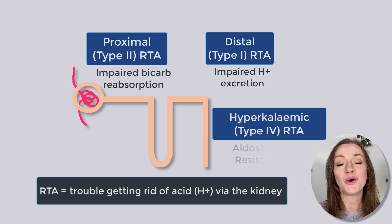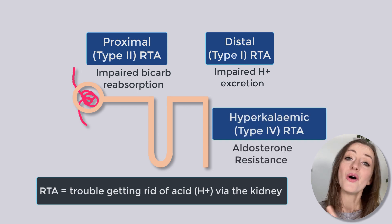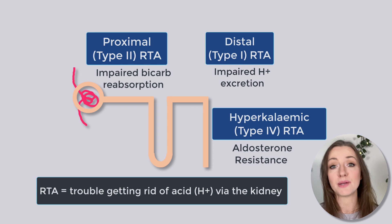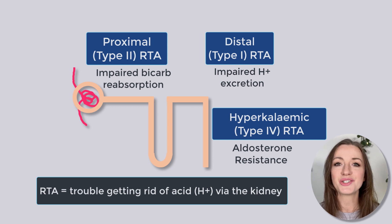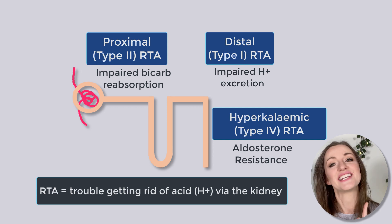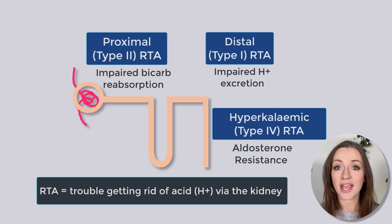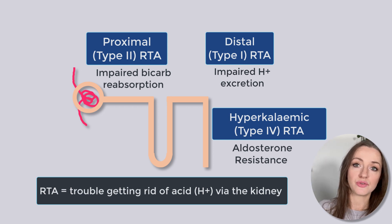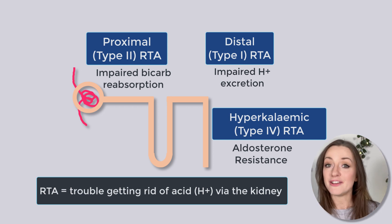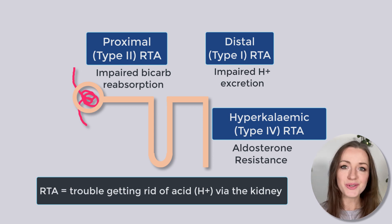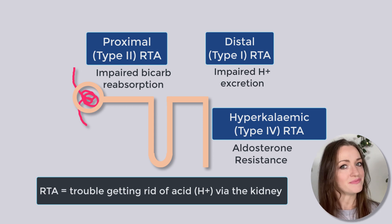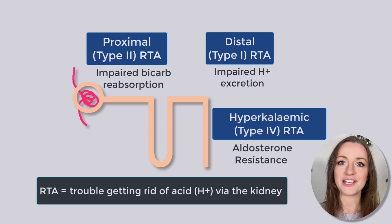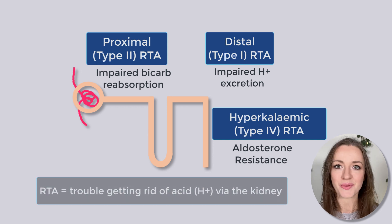In the collecting duct, we also have aldosterone — a hormone we normally associate with reabsorbing salt and water. But the truth is that aldosterone also has a side hustle: helping us to get rid of hydrogen ions when you're acidotic. So if you're acidic, your aldosterone is going to go up and it will come to the kidney and help you get rid of that acid as well.